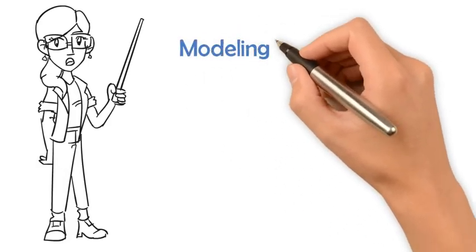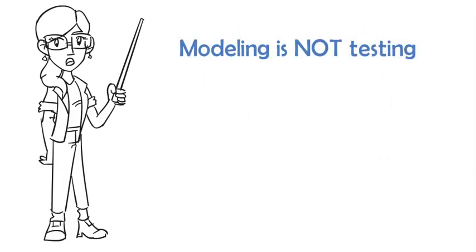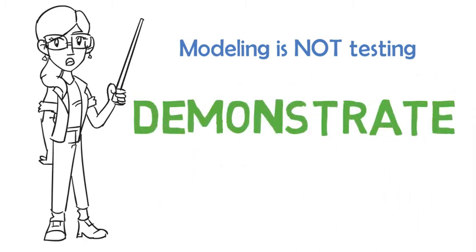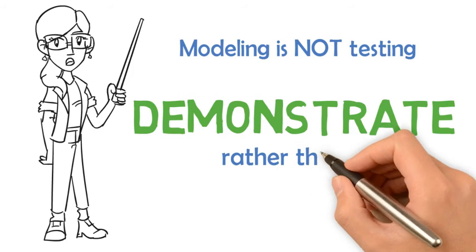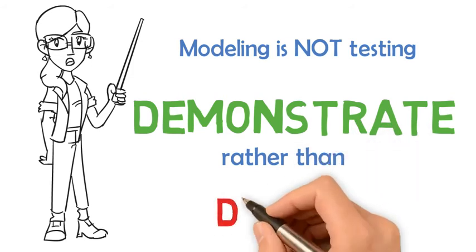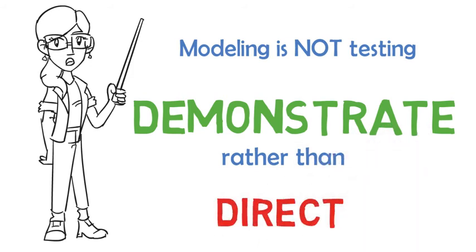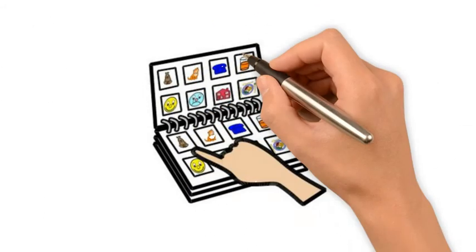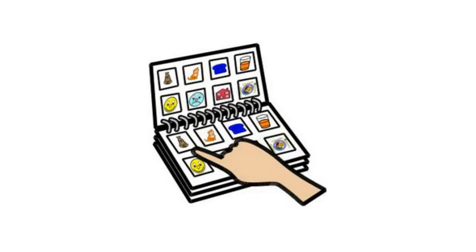Modeling is not testing. Communication partners should aim to demonstrate language rather than direct it. Children must be taught how to use their tool. All communication partners — for example, teachers, educational assistants, parents, siblings, child care providers, and community members — should model using the tool as much as possible. Aim to model vocabulary throughout the day, as repetition helps learning.